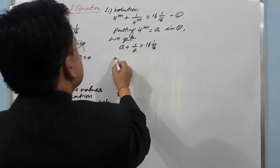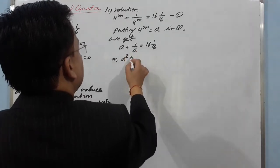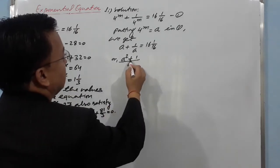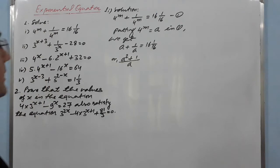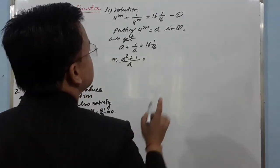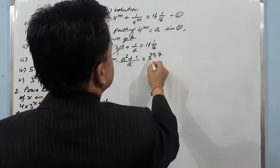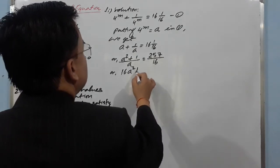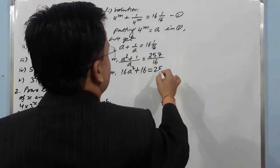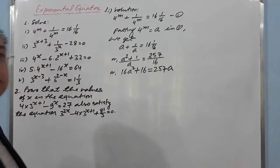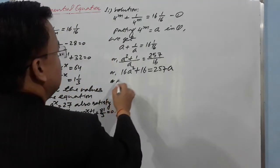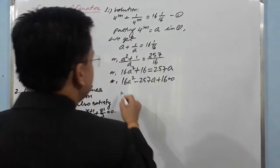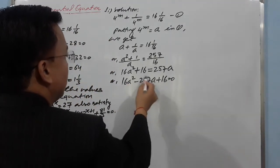Simplifying the left-hand side, we write (a² + 1)/a = 16/16, which gives us 257/16. Now doing cross multiplication, we get: 16a² - 257a + 16 = 0.